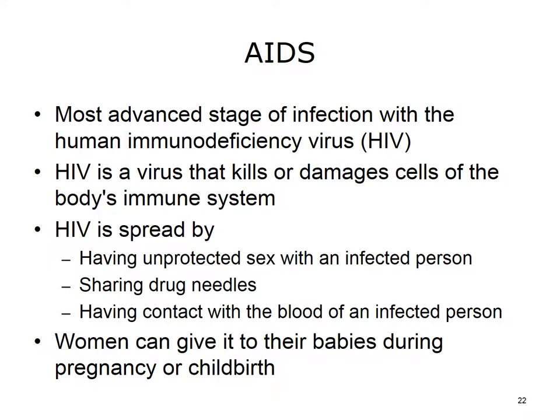A condition of the immune system of serious concern is AIDS, which stands for Acquired Immunodeficiency Syndrome. It is the most advanced stage of infection with the Human Immunodeficiency Virus, or HIV. HIV is a virus that kills or damages the cells of the body's immune system, interfering with your body's ability to fight the organisms that cause disease. HIV most often spreads through unprotected sex with an infected person. AIDS may also be spread by sharing drug needles or through contact with the blood of an infected person. Women who are infected with HIV can give it to their babies during pregnancy or childbirth.